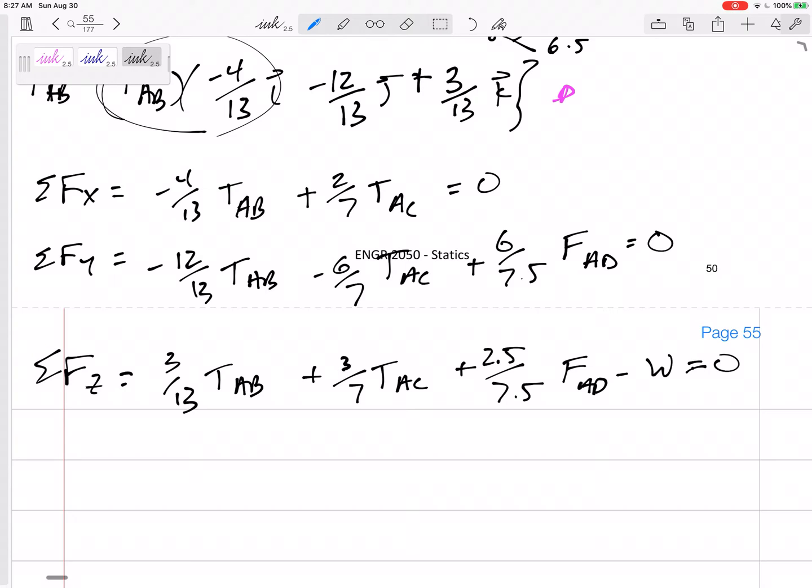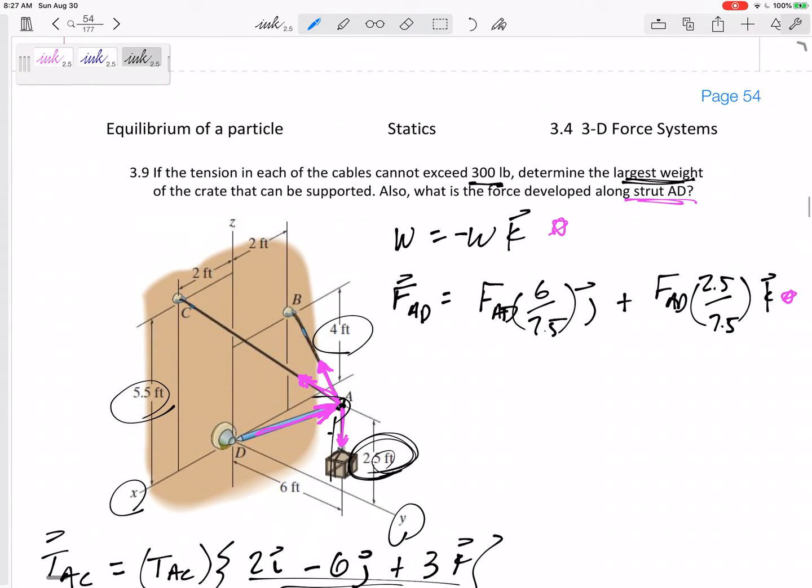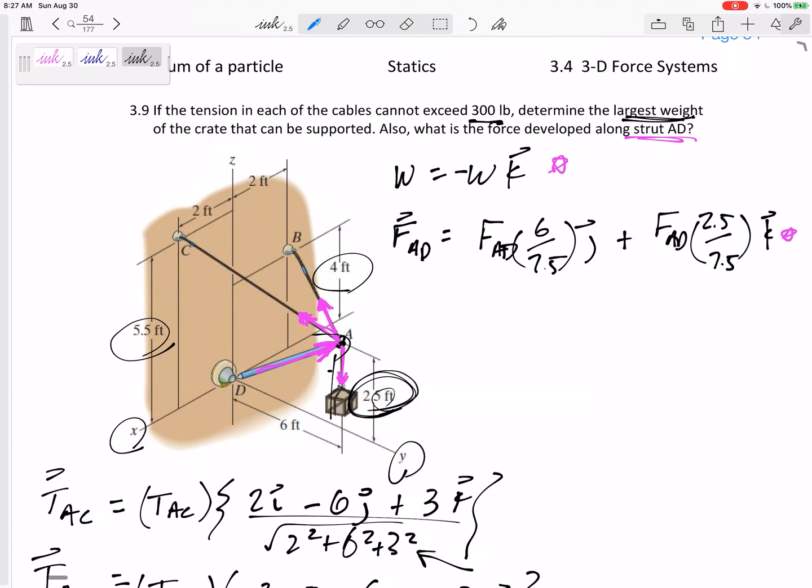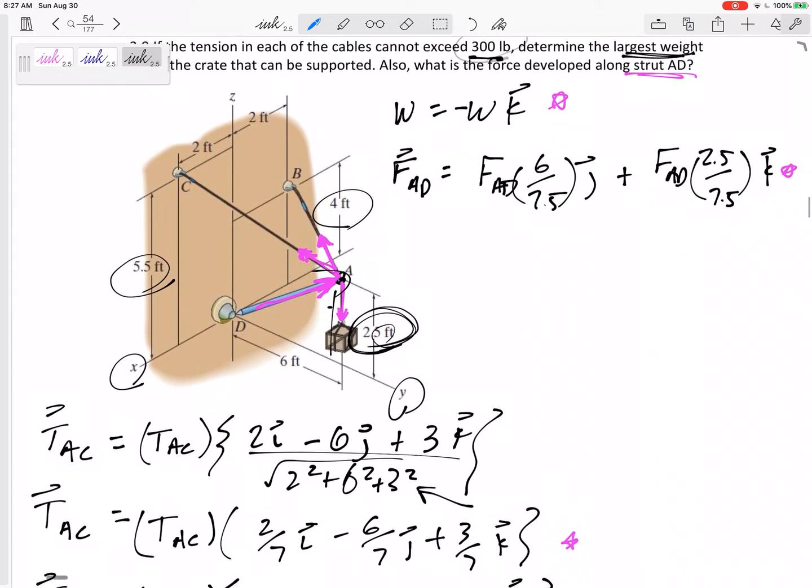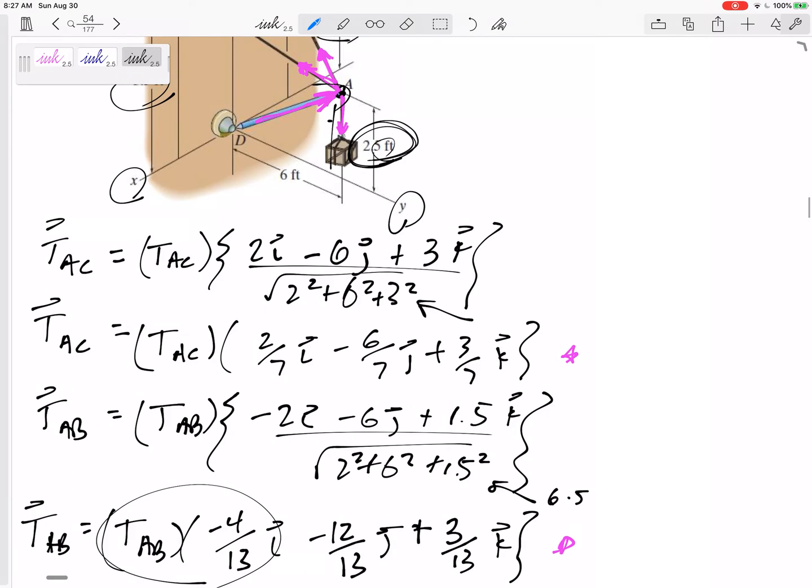But, this is one of those problems where it says, hey, what's the maximum weight such that none of these cables exceed this maximum. And so, I just need to guess one of them. Which of these cables cannot exceed 300 pounds? So, either TAB equals 300 or TAC equals 300. Both of them do not equal 300.